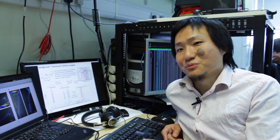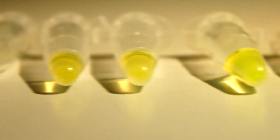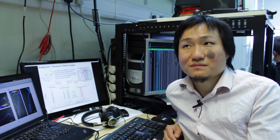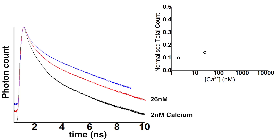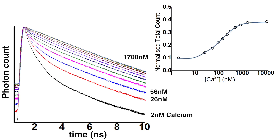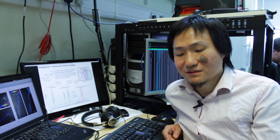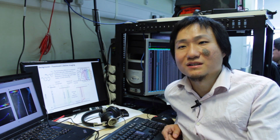You start with zero calcium solutions quenched by a large amount of BAPTA, and then gradually add high calcium solutions via solution replacement. Each will have a unique decay time from which we can build our calibration curve. Once you obtain the calibration curves, any recording you get from acute slices or in vivo will produce a normalized total count map, which you can then use the calibration curve to convert into a calcium heat map.